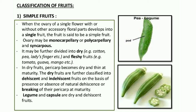In dry fruits, the pericarp becomes dry and thin at maturity — the outer layer will be thin and dry. Dry fruits are further classified into dehiscent and indehiscent fruits, on the basis of presence or absence of natural dehiscence or breaking of the pericarp at maturity. After maturity, if the fruit opens naturally, it is called dehiscent. If the fruit does not open naturally, it is called indehiscent. Legume and capsule are dry and dehiscent fruits — the fruits present in family Fabaceae, like beans and lettuce, open naturally when mature.